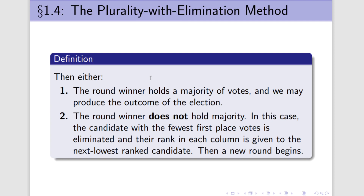Or the round winner doesn't hold majority, and that's more interesting. In that case, what we have to do is find the candidate with the fewest first place votes, eliminate them, and then shift all of the columns up so that there are no gaps in the preference schedule. Their first place votes — that is, the first place votes of the candidate who was eliminated — they switch down to the next person in that column, and then we start a new round.